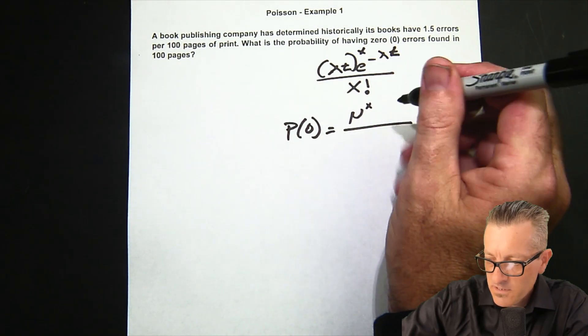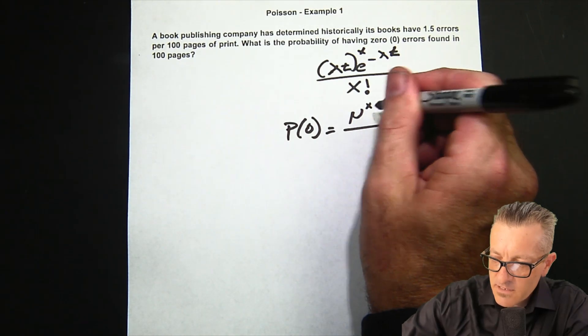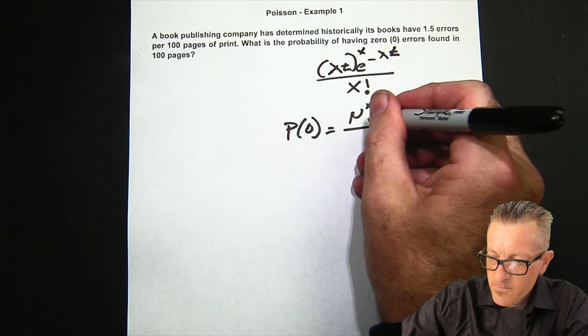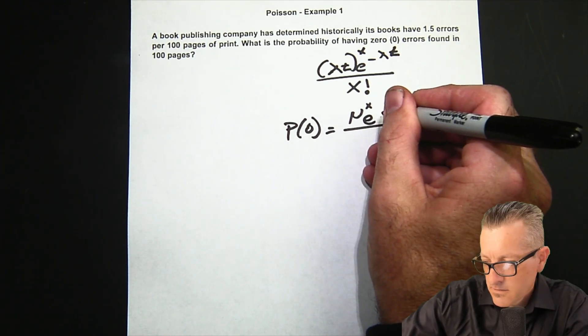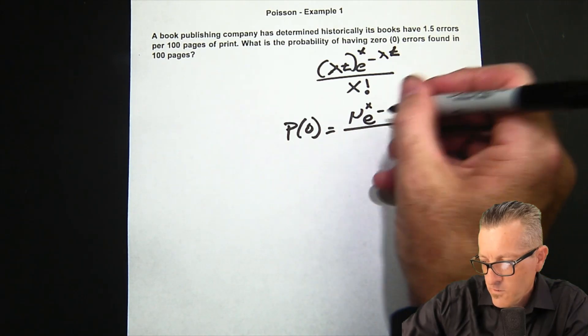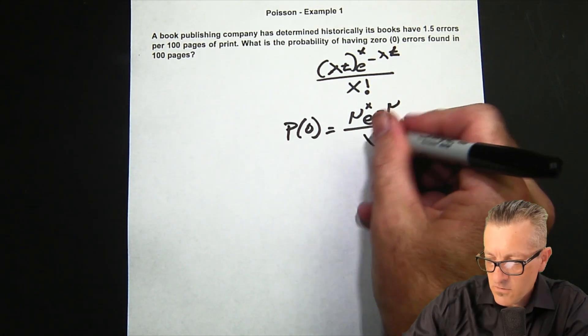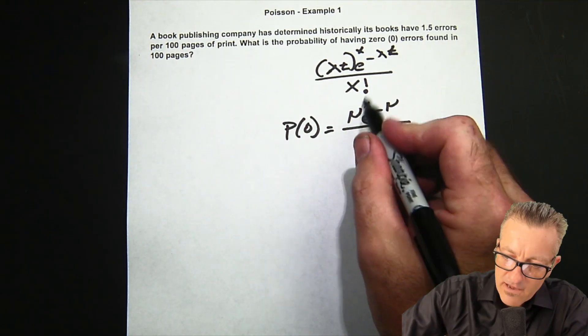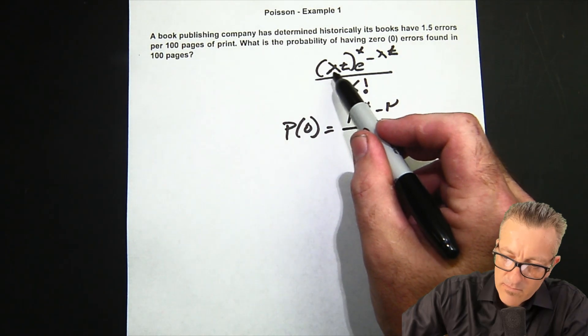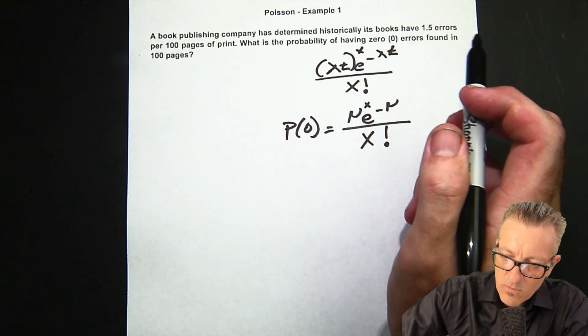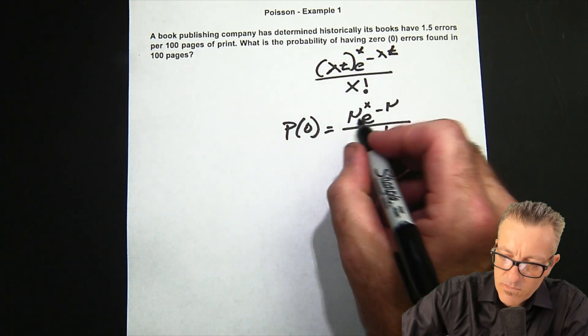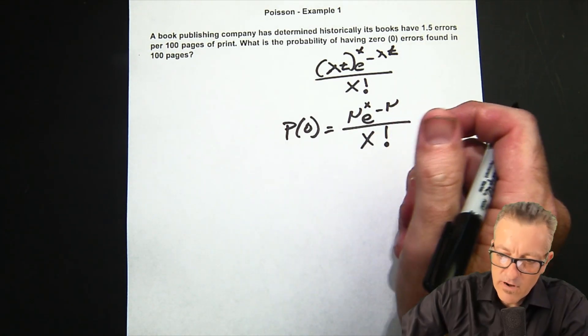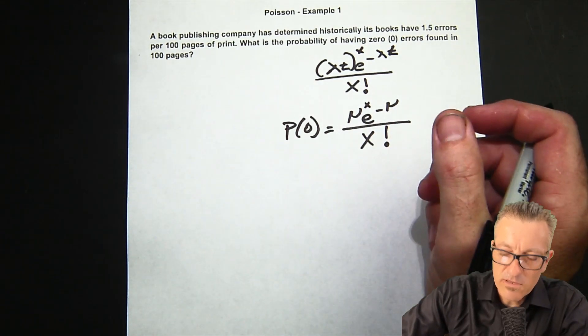So the formula becomes: P(X) equals mu to the exponent of X, times e to the negative exponent of mu, divided by X factorial. What I do is I clean up the part where we have lambda times T, so I make it one package and we call this mu.